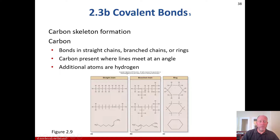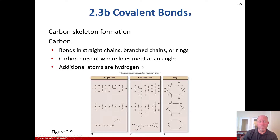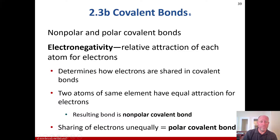The carbon skeleton: carbon can form bonds in straight chains, branched chains, or rings. The carbon is present where the lines meet at an angle. You can see a straight chain versus a branch chain and a ring — the additional atoms shown are hydrogen. We'll come back to that more over the course.